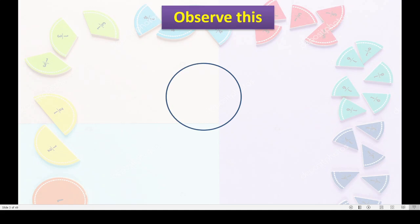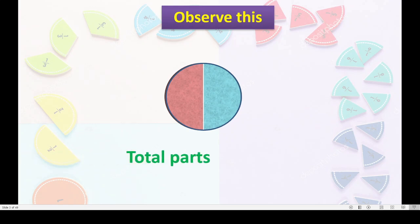Now see this circle. I will color this circle. I have colored this circle blue — that is half part of this circle. And the rest half I will color red. So total how many parts? We have done two parts of a circle. These two parts are equal in shape and size. That is nothing but half of the full.